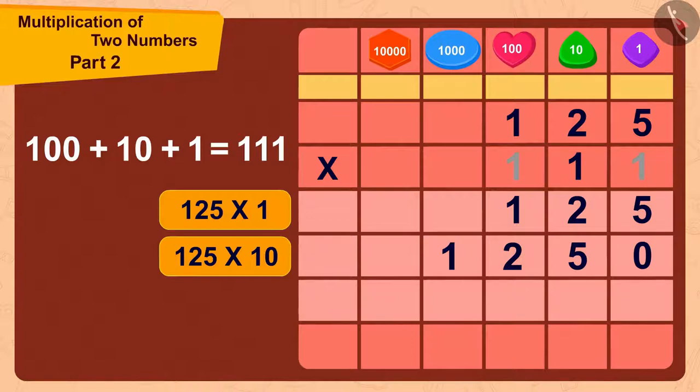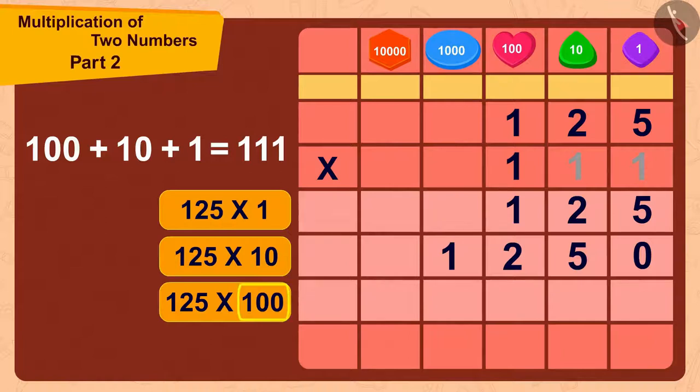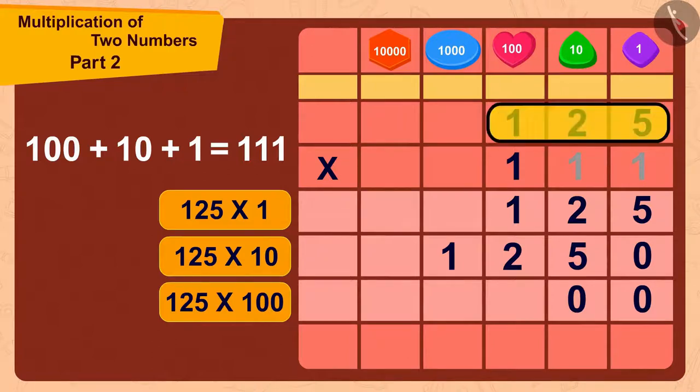Now, we just have to multiply 125 with 100. Because there are two zeros in a hundred, we will first write two zeros. And now, we just have to multiply 125 with 1.